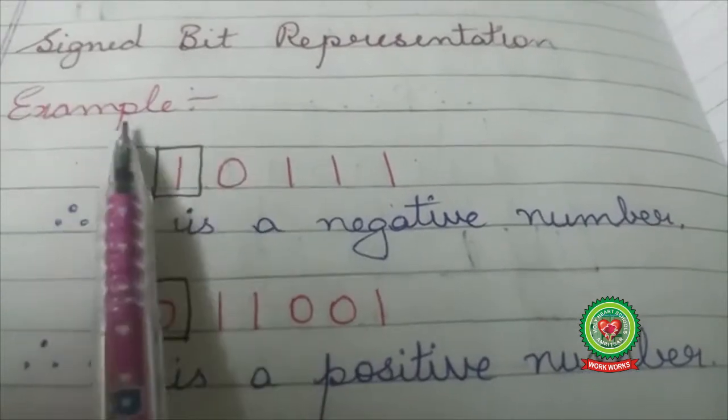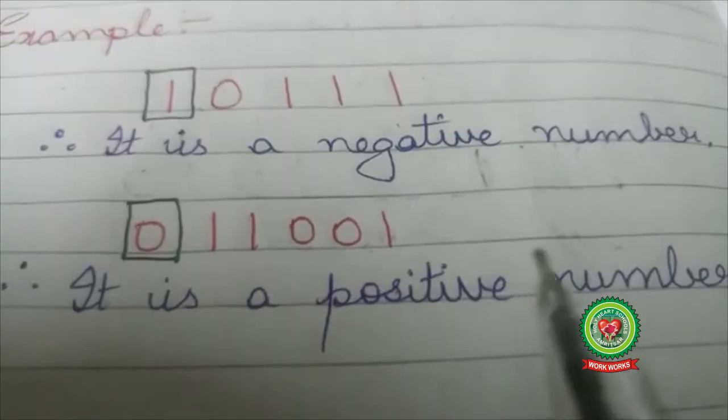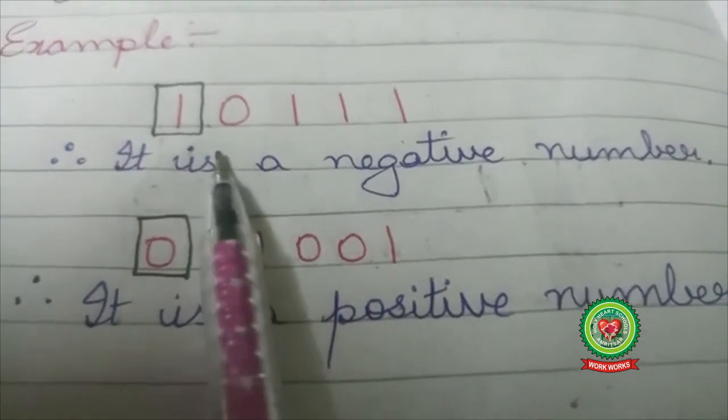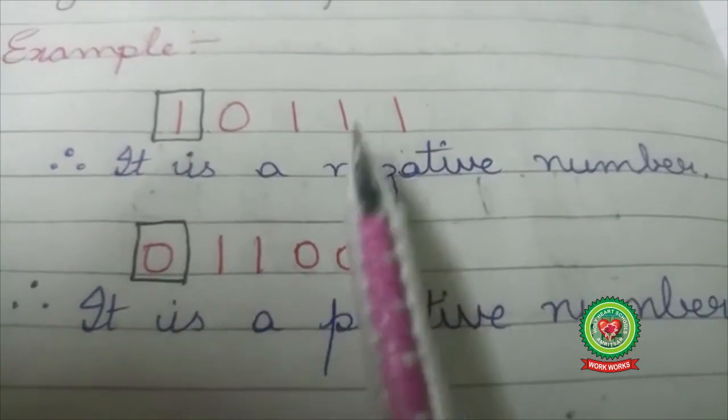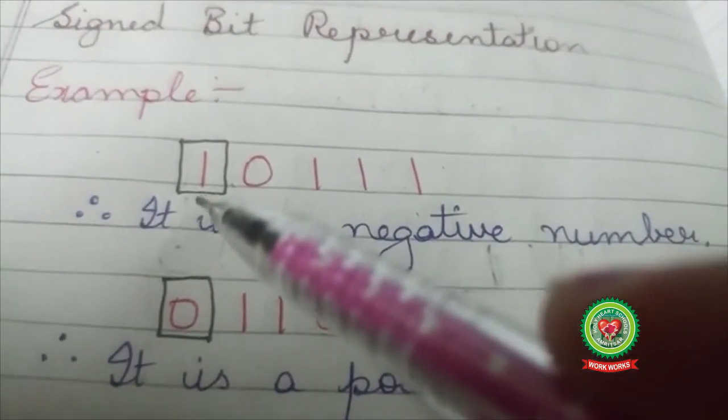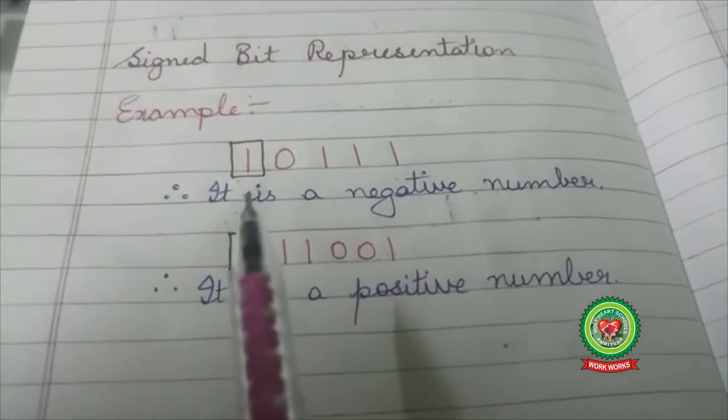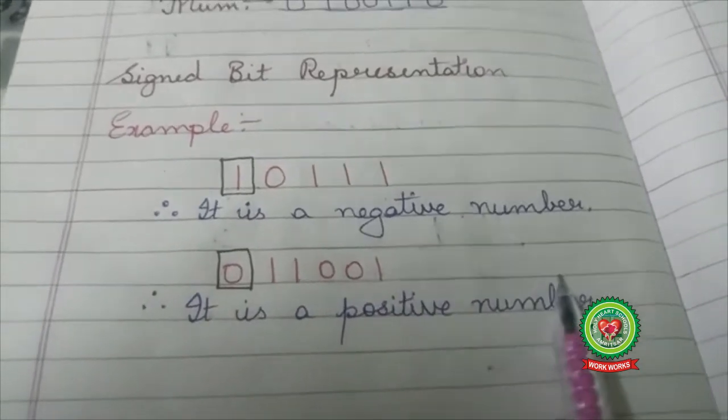Now what is sign bit representation of a binary number? Let us consider an example 10111. For sign bit representation I have to consider the leftmost bit. Here the leftmost bit is 1, so it is a negative number.